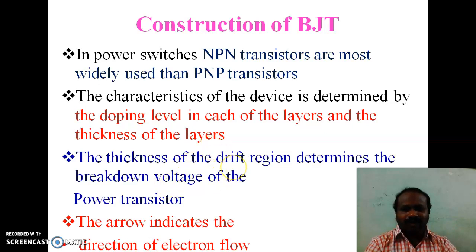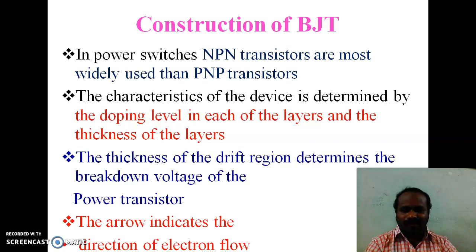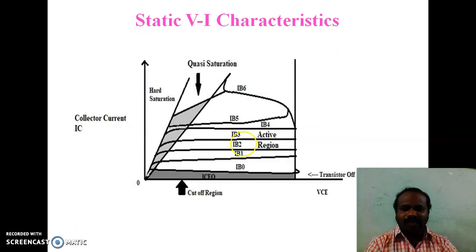The characteristics of the device are determined by the doping level in each layer and the thickness of the layer. The thickness of the drift region determines the breakdown voltage of the power transistor. The arrow in the symbol indicates the direction of electron flow. This is the static VI characteristics.